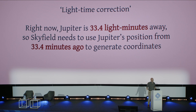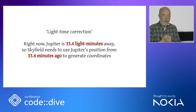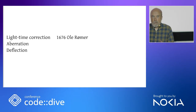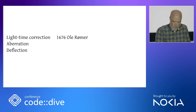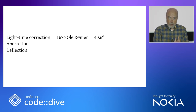All astronomy libraries and computations today need to perform a light-time correction. As of the moment of this talk, Jupiter is 33.4 light minutes away, so Skyfield needs to use Jupiter's position from a half hour ago to generate coordinates, because we can only see the light that left it 33.4 minutes ago. How big a difference does this make? For the fastest planet — little Mercury in the smallest orbit around the Sun — it can make a difference of up to 40 arc seconds in where you point an Earth-based instrument.